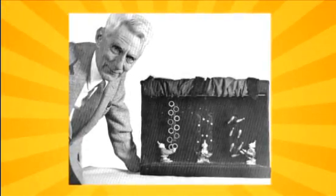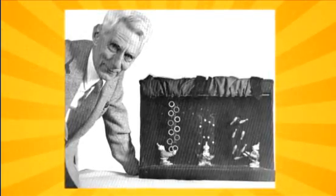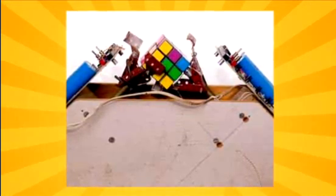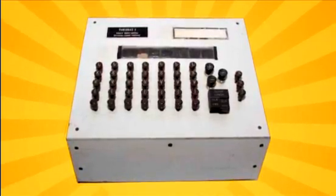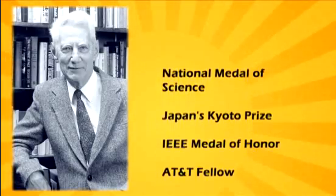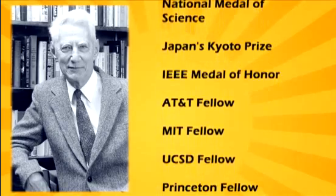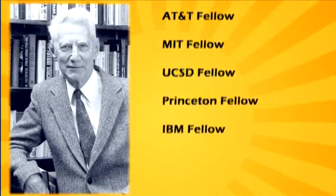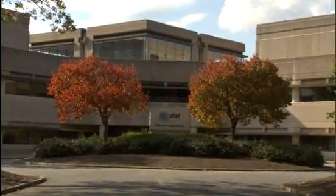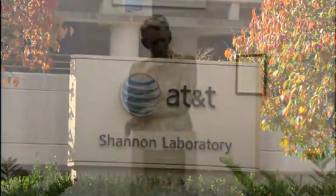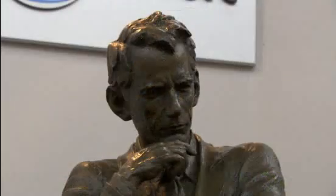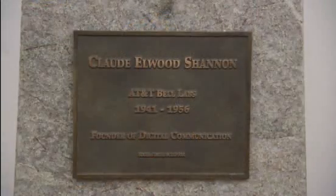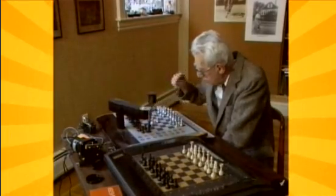Shannon left AT&T in 1956 with his bride Betty, a Bell Labs numerical analyst, to teach at MIT, and retired in 1978 to pursue his other passions — juggling and building gadgets like a gasoline-powered pogo stick, a robot that could solve Rubik's cube, and a throwback machine: a computer that calculates in Roman numerals. His awards include the National Medal of Science, Japan's Kyoto Prize, and the IEEE Medal of Honor. He was a fellow at AT&T, MIT, UCSD, Princeton, and IBM, to name just a few. Perhaps his biggest honor is in Florham Park, New Jersey, where the research labs are named after Shannon — it's hard to think of anybody who had more influence on the work done there.